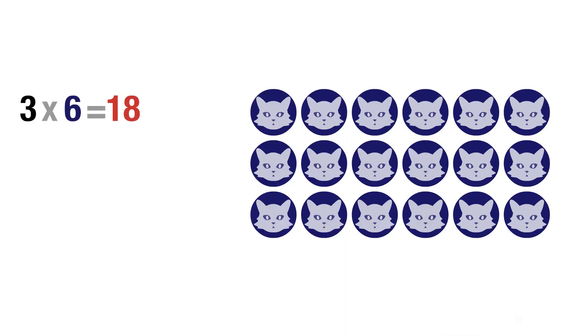We have three equal rows and six cats in each row. Our total is 18 cats, so the multiplication sentence will be 3 times 6 equals 18. If we divide the 18 cats into three equal groups or rows, we will have six cats in each row. This is our related division fact.